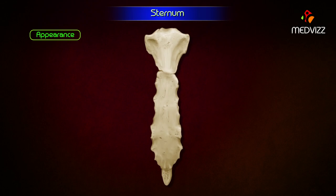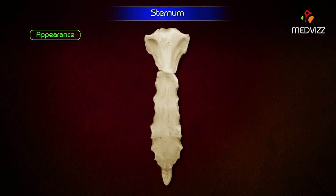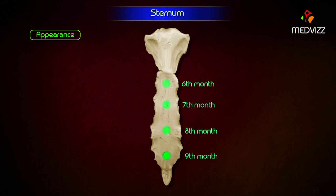Appearance. The centers appear in descending order for the four different parts of the sternum. The center for the manubrium appears by the fifth month of intrauterine life. The centers for the body: first sternebra by the sixth month, second sternebra by the seventh month, third sternebra by the eighth month, fourth sternebra by the ninth month of intrauterine life. The center for the xiphoid process appears by the third year.